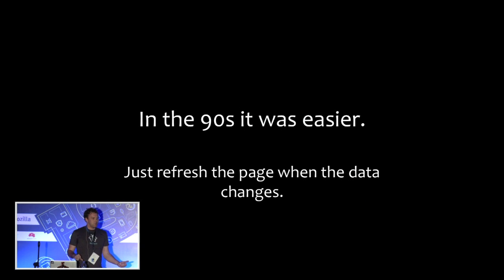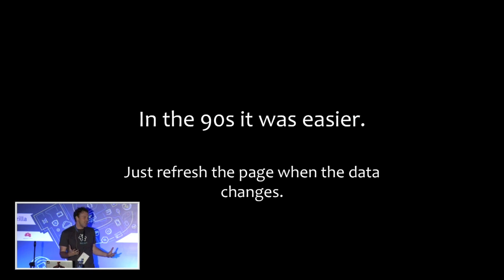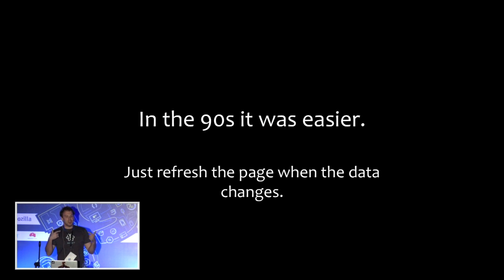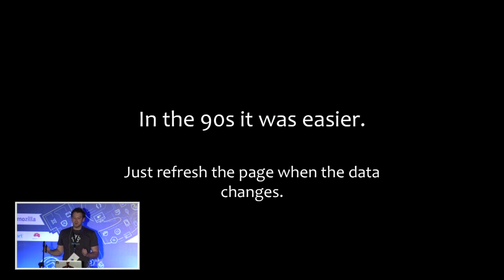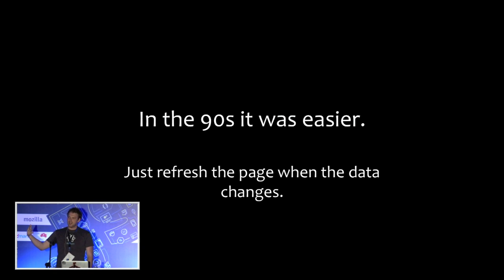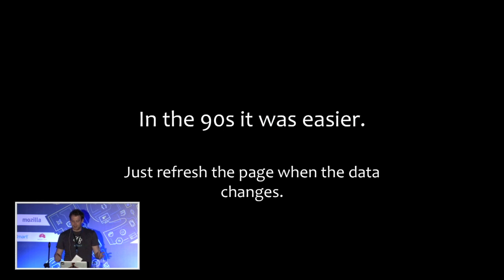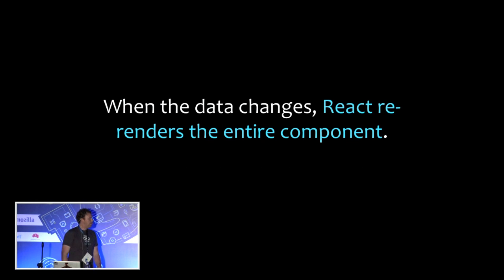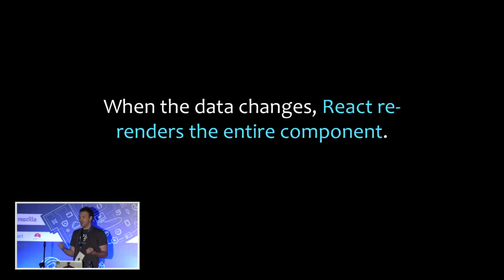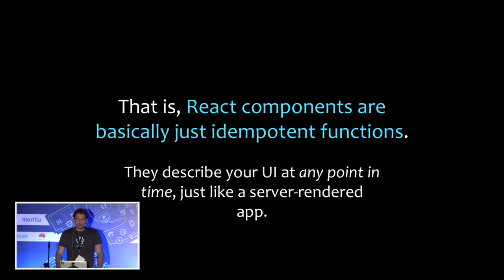If we turn back to 1999, where we were writing PHP spaghetti code executed on the server, everything was actually easier. If I wanted to submit a new to-do item, I didn't have to track every place where I put the number of to-do items in the DOM and update each. I simply submitted to the server, the server wrote it to the database, selected all the information back out, and re-rendered the whole page. Conceptually, it's really simple to manage data changing over time when you just re-render the entire page — it's a single point in time, not evolving over time. React borrows that. When your data changes, we re-render the entire component, throw out the old representation, call all your render methods again, and produce the new representation. React components are just idempotent functions that describe your UI at any point in time, just like a server-rendered app.